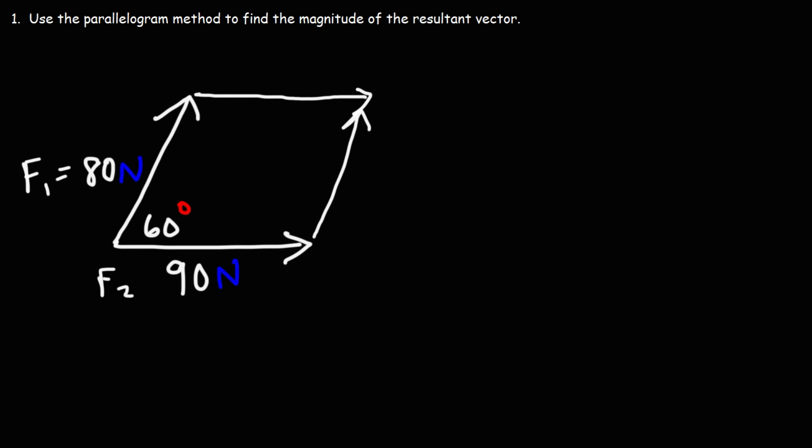Now when you draw an arrow from the intersection of the first two vectors to the intersection of the last two vectors, that'll give you your resultant vector.